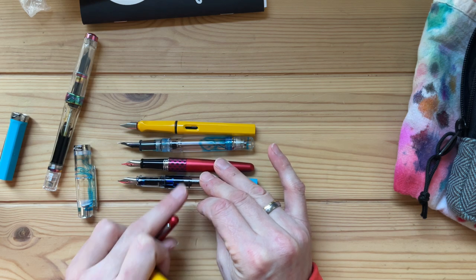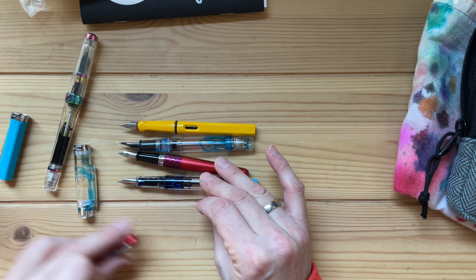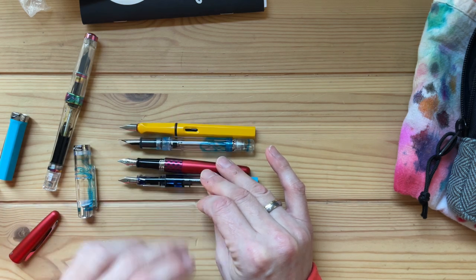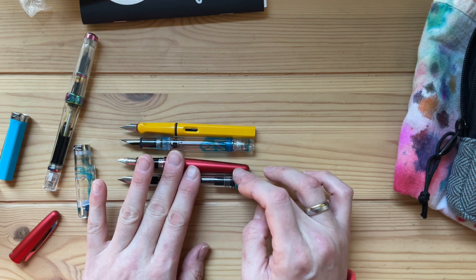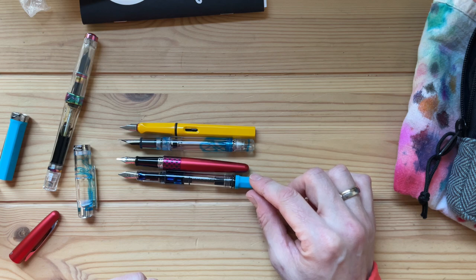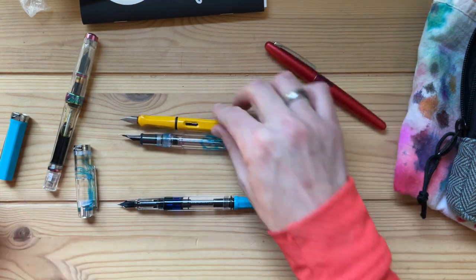If you put it on the same place where the section is of this pen, then the Pilot Metropolitan is the shortest. All the others compare in size pretty well.